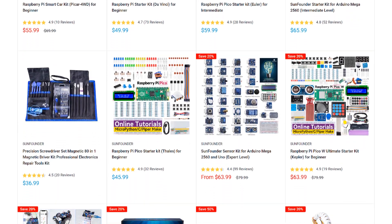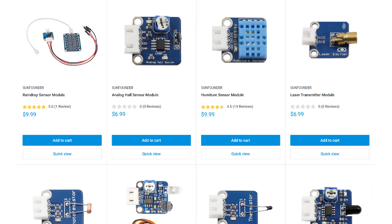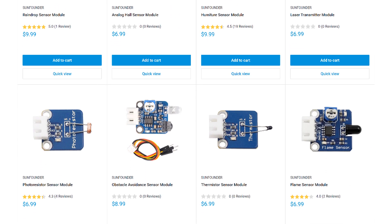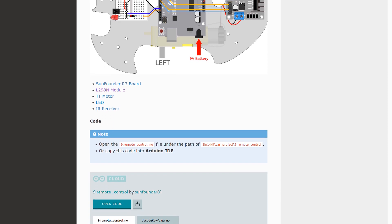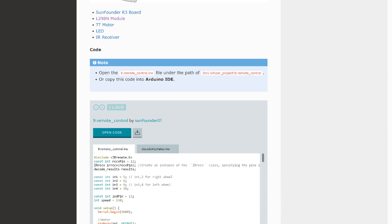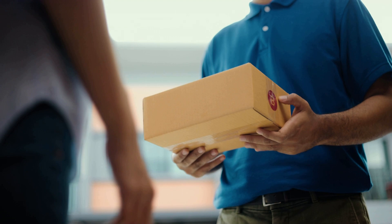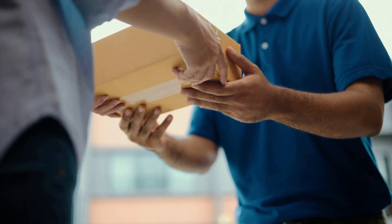SunFounder is my go-to source for sensors, modules, and other parts for the Arduino and Raspberry Pi. They have a huge selection of STEM, robotics, and IoT kits, and lots of useful sensors and modules. Every product has an online tutorial with wiring diagrams and example code. They also offer free shipping on all orders, with no minimum. Give them a try at www.sunfounder.com next time you need to order some parts.